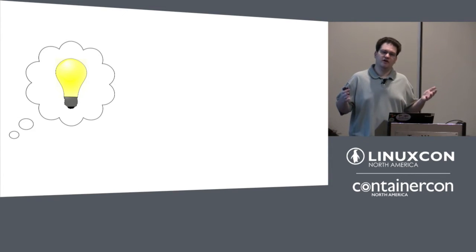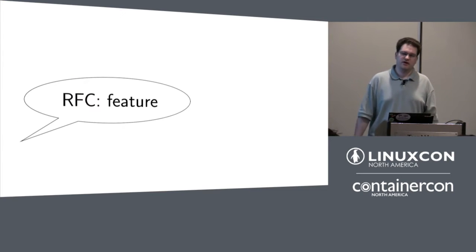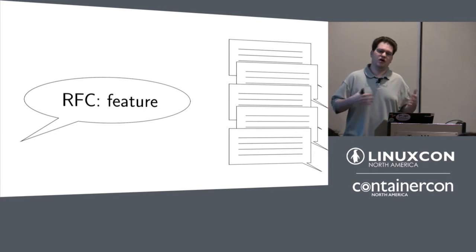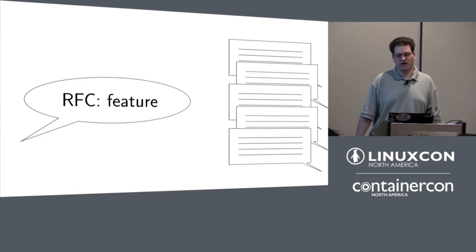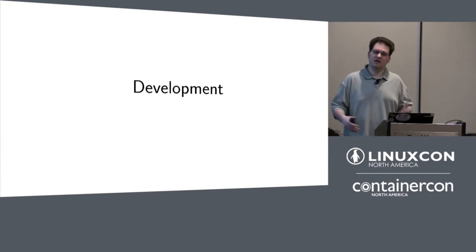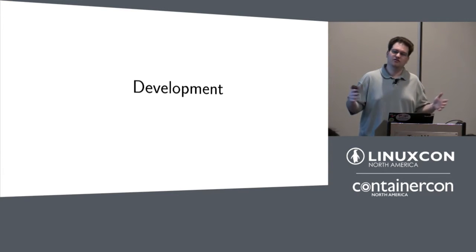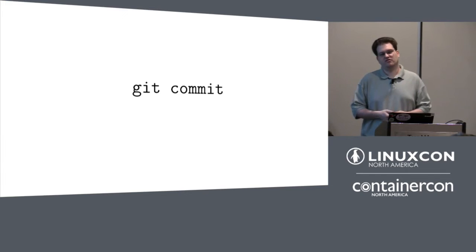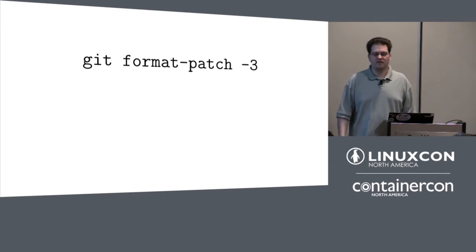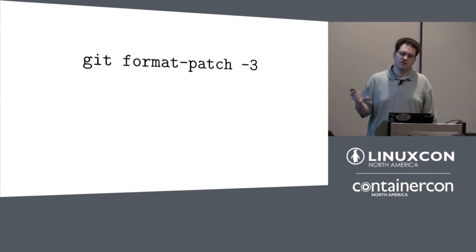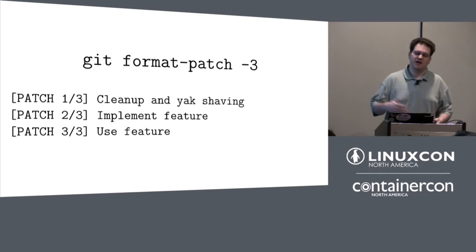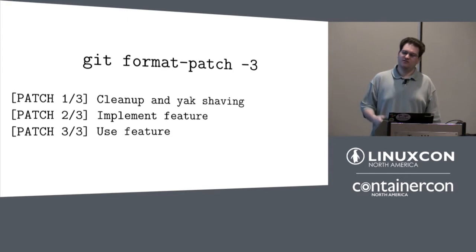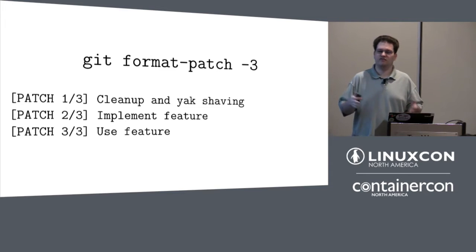So you go ahead and collaborate, figure out how this feature ought to work, send out an RFC. You get all sorts of feedback telling you how it might work, how you should structure the patch, who might be interested in working on it. You go off and do a pile of development, cleanup, yak shaving, figure out exactly how to get the feature to work. You make a series of Git commits, and when you're done, you have a stack of patches you want to get upstreamed. You run something like format-patch, tell it you've got three patches, and you get a patch series. Patch one does cleanup and preparatory yak shaving for the infrastructure. Patch two implements the thing you wanted, and patch three has all sorts of lovely uses for it.